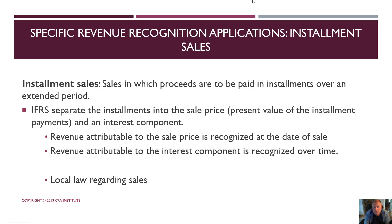The next topic is installment sales. Oftentimes people sell something and payments are made over an extended period — this is an installment sale. It essentially is a sale with accounts receivable, a loan so to speak. IFRS says you need to separate the installments into the sales price and the present value of the installment payments, because there is an interest component involved. Revenue attributable to the sales price is recognized at the date of sale, while the interest component is recognized over time.